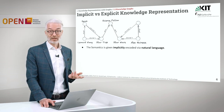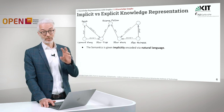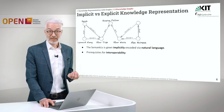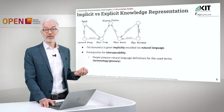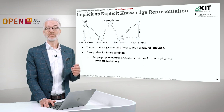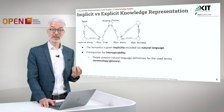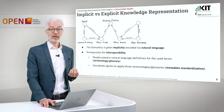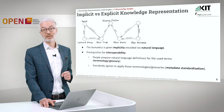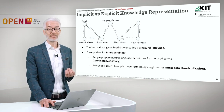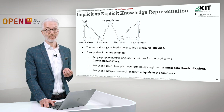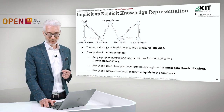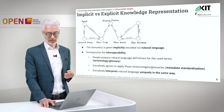Thereby, we have to distinguish between implicit and explicit knowledge representation. In our graph, the semantics is usually given implicitly, encoded via natural language. A prerequisite for interoperability is that people prepare natural language definitions for all of the terms used — so we need a terminology or glossary that explains the things we are talking about. And everybody has to agree to apply those terminologies and glossaries, so we need some kind of metadata standardization. We also have to guarantee that everybody interprets natural language uniquely and in the same way, because otherwise interoperability is not possible.